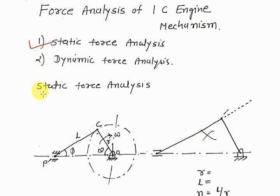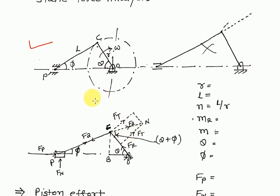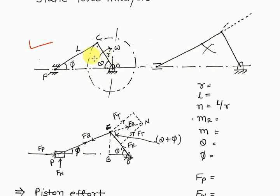Here you can see this figure. There is a piston, a connecting rod, and a crank. The crank has angular velocity omega and radius r. Theta is the crank angle, and phi is the angle between the connecting rod and the line of the piston axis.